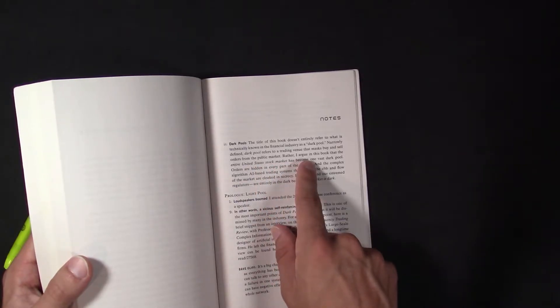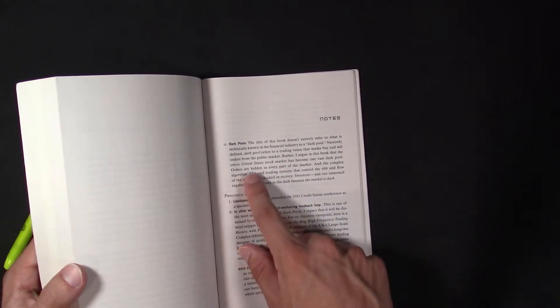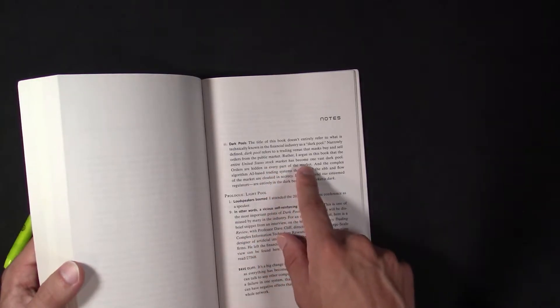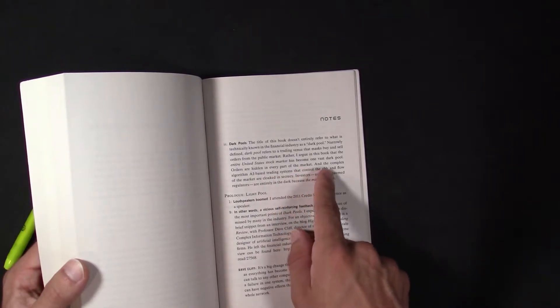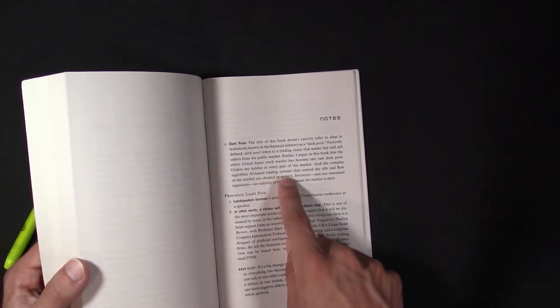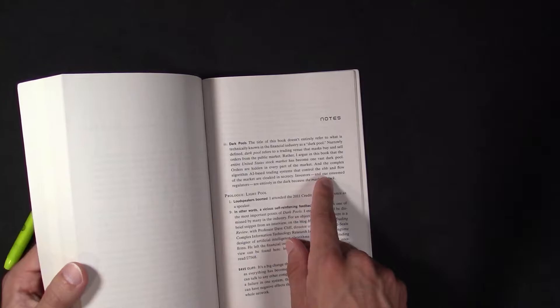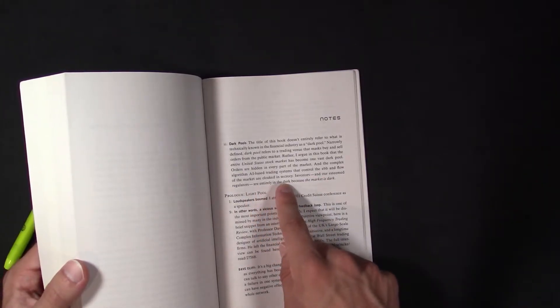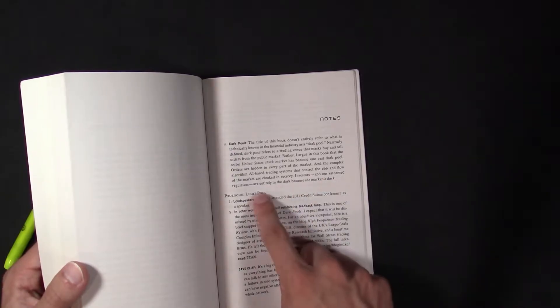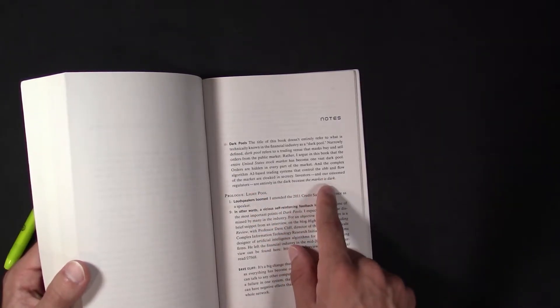Rather, I argue in this book that the entire United States stock market has become one vast dark pool. Orders are hidden in every part of the market, and the complex algorithms, AI-based trading system that controls the ebb and flow of the market are cloaked in secrecy. Investors and our esteemed regulators are entirely in the dark because the market is dark.